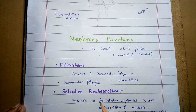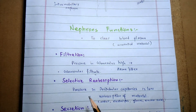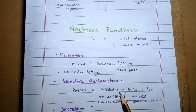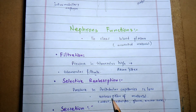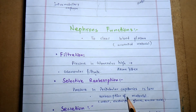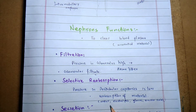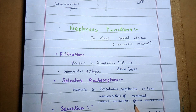Number two is selective reabsorption. Because of the low pressure in peritubular capillaries, they act like the venous end of the capillaries, causing selective reabsorption of wanted substances — such as water, electrolytes, glucose, amino acids, etc. — from the lumen of the renal tubule into the plasma of peritubular capillaries.